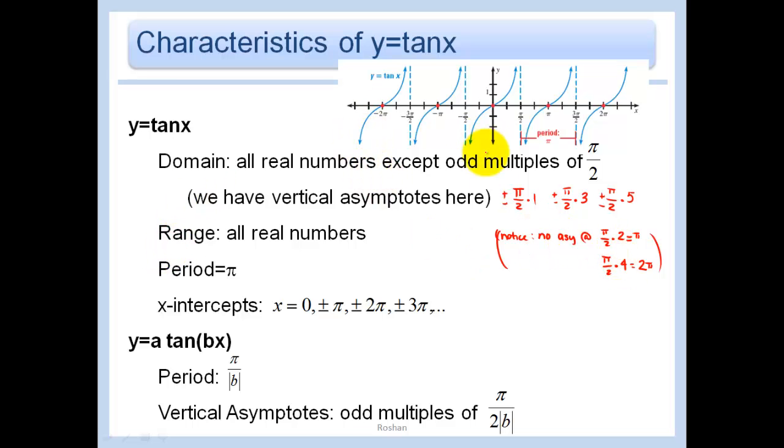So we can also notice that there's no asymptotes at those even multiples of pi over 2. Our range is all real numbers because we have no restriction on the y's. They go on and on forever in the y direction. The period in this case is not 2 pi. It completes one cycle in pi. So from negative pi over 2 to pi over 2, we only went pi. So our period here is simply pi. And the x-intercepts, again, just look at the graph. They're going to be at all of the even multiples of the pi over 2, all the ones pretty much that we did not eliminate in the asymptotes.